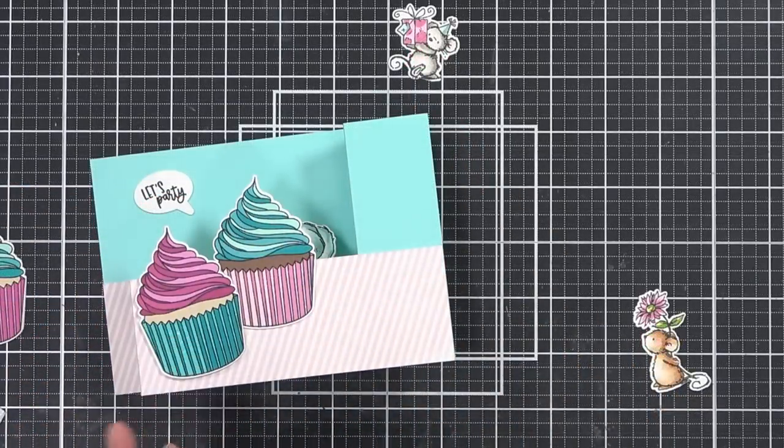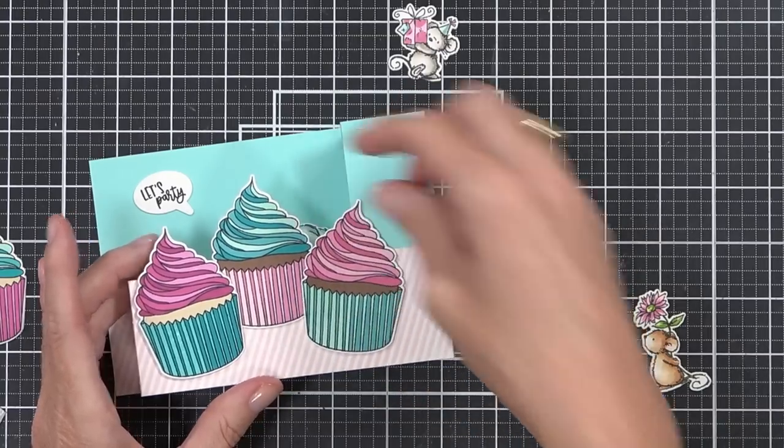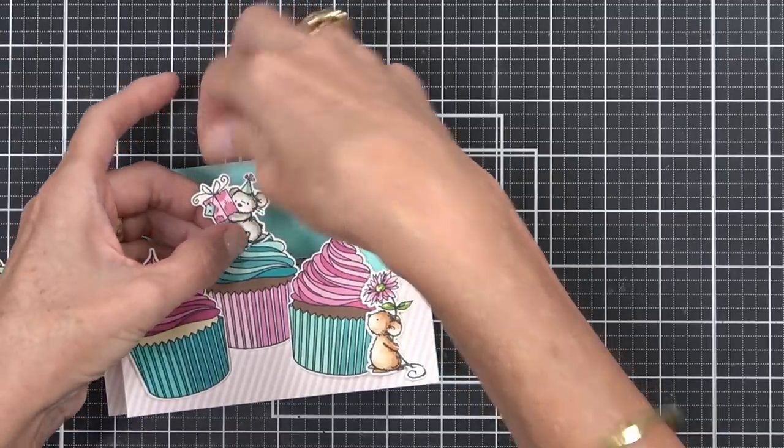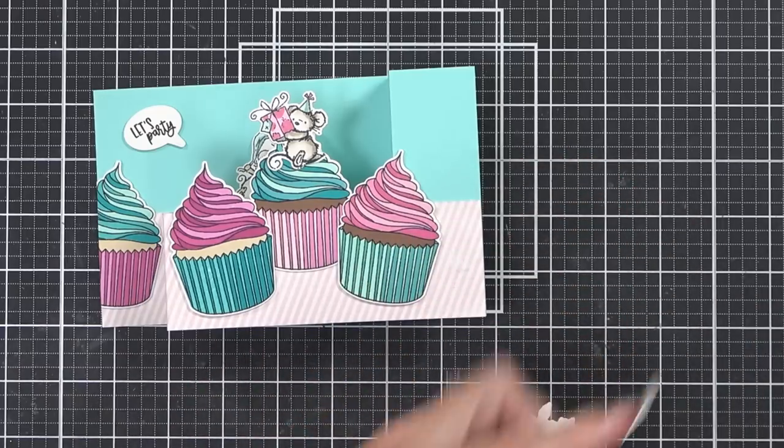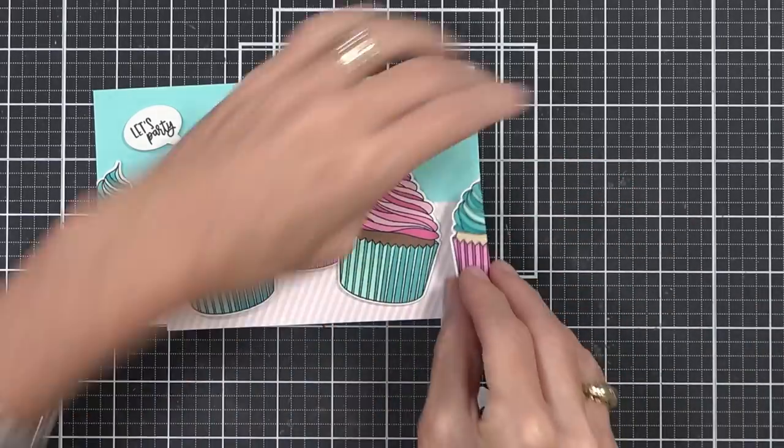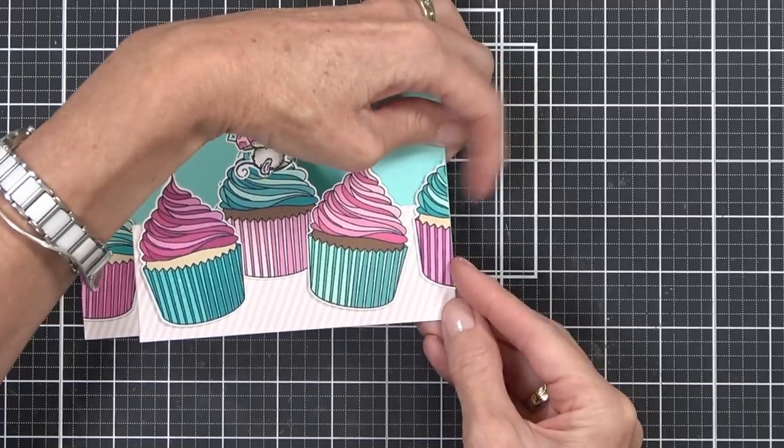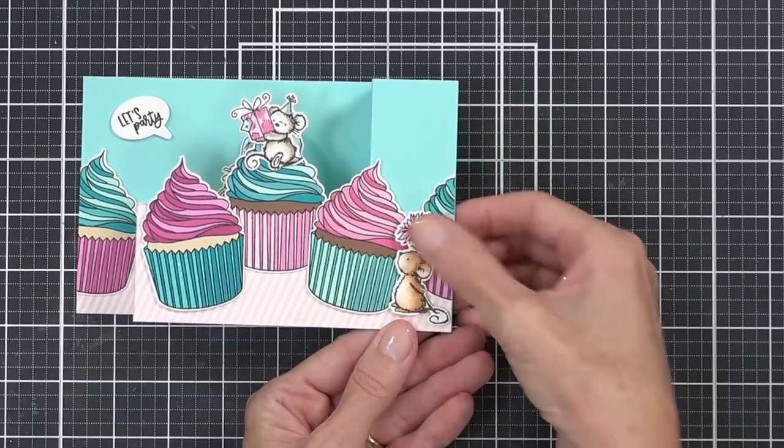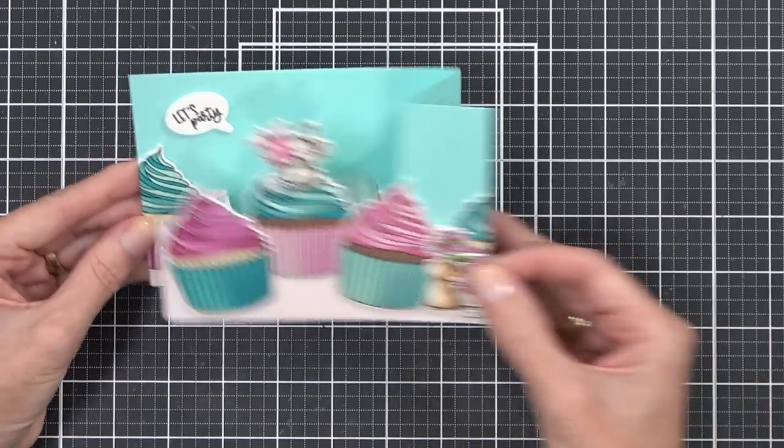I'm going to decorate it again with all my little bits and pieces. Like I said, I did make a ton of images and cupcakes here and I might as well use them. I did use this same sentiment, but this time I didn't heat emboss it. I just did it on some white cardstock, and I made sure that I've set the sentiment so that when the wiper mechanism happens, it looks like the little mouse is saying "Let's Party." But when the whole card is closed, it looks like the little mouse sitting on the cupcake is saying that. So how cool is that?